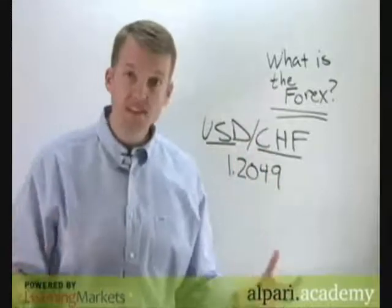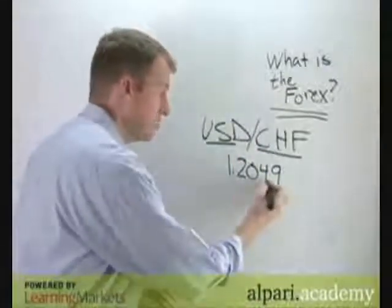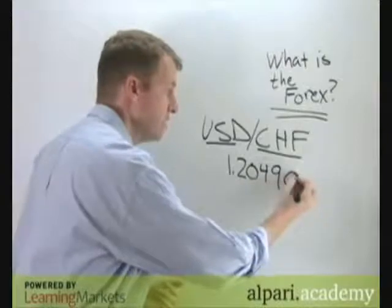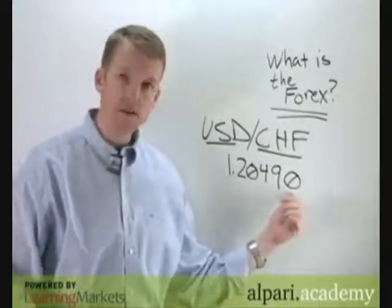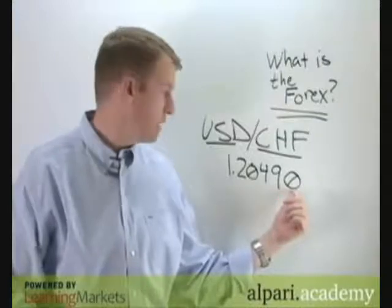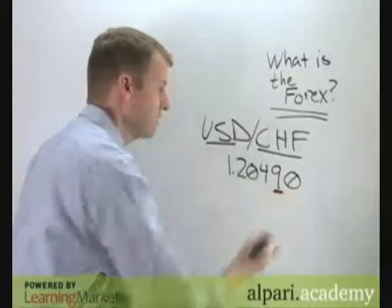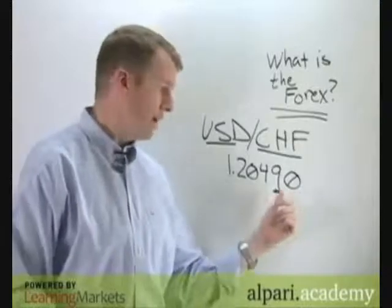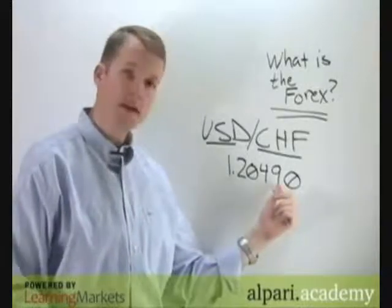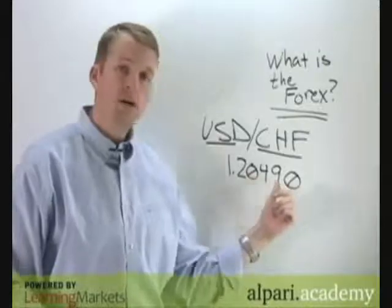Exchange rates are typically carried out to the fourth or fifth decimal place when you're getting really good pricing, so you can get all the way out to the fifth decimal place. This decimal place right here is called a pip. One move up or down in that number — so if we go from 2049 to 2050 — then we've moved one pip.